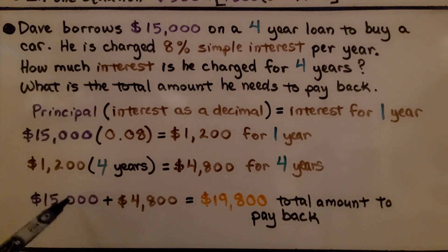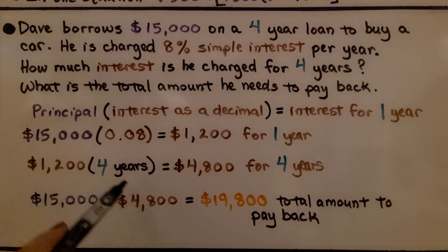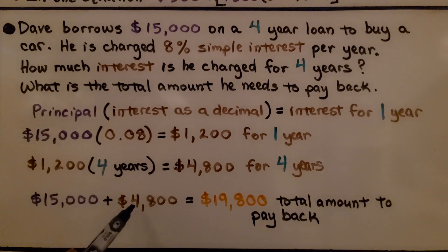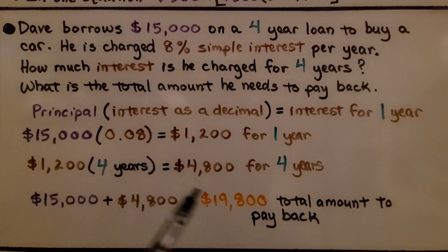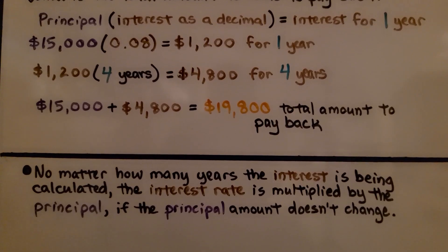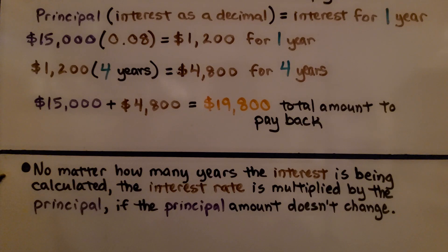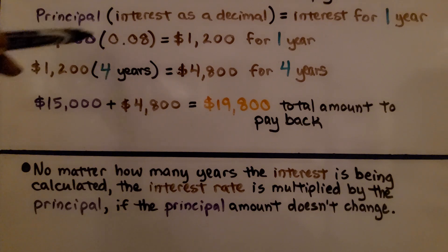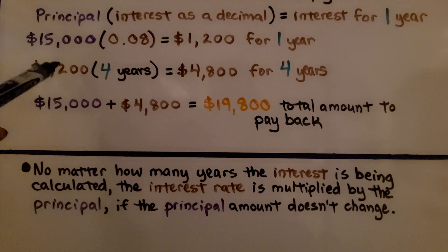We add the original principal of $15,000 plus the interest for four years, $4,800, and we get $19,800. In order to buy this car for $15,000, Dave is going to have to pay back $19,800. The bank is charging him $4,800 to borrow the money. No matter how many years, the interest rate is multiplied by the principal, then we multiply that yearly interest amount by the number of years.